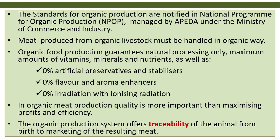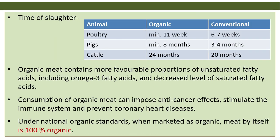In organic meat production, quality is more important than maximizing profits and efficiency. The organic production system offers full traceability of the animal from birth to marketing. Minimum slaughter ages: poultry 11 weeks (conventional 5-7 weeks), pigs minimum 8 months (conventional 3-4 months), cattle 24 months organic versus 20 months conventional.